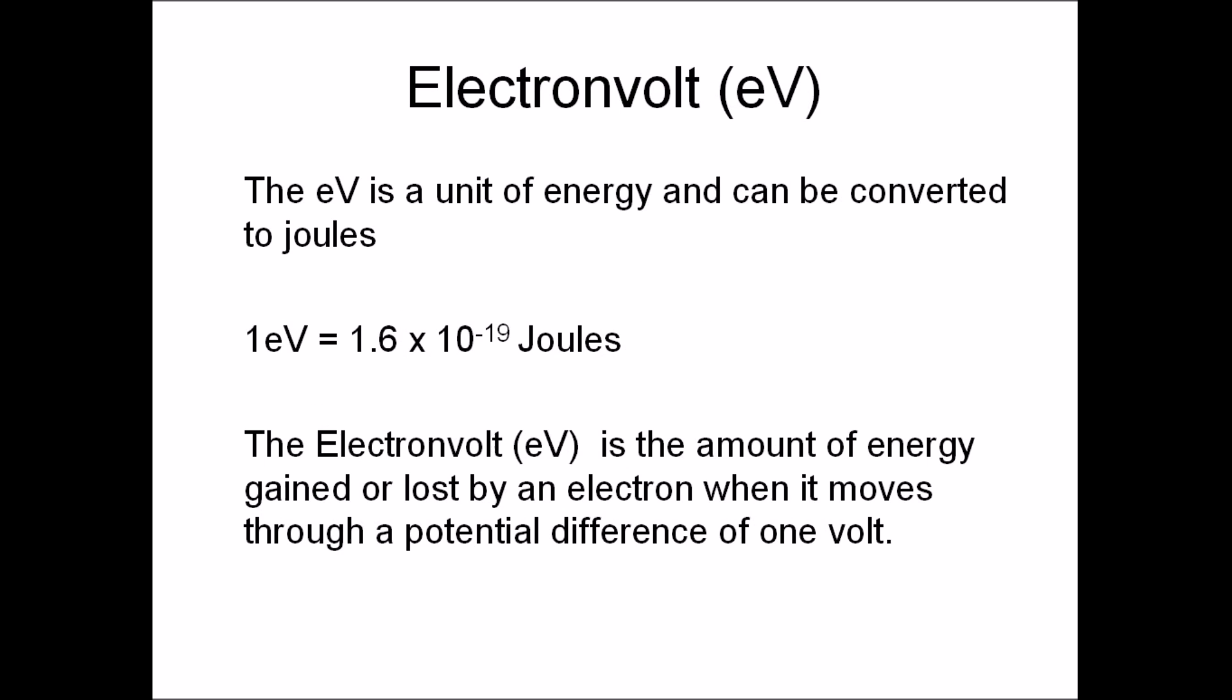Electron volts are a measure of energy and they can be converted to the standard unit of energy joules. You multiply the number of electron volts by the charge on an electron which is 1.6 by 10 to the minus 19 to convert electron volts to joules.